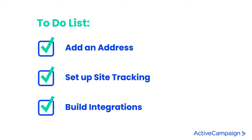Also, you want to set up site tracking. Site tracking is what's going to allow you to follow your contacts and cookie them straight from your website. All that information will then communicate into ActiveCampaign so you can see the things they're clicking on, the pages they're visiting, and then respond and act on that — really making sure that you're following your customer's journey.